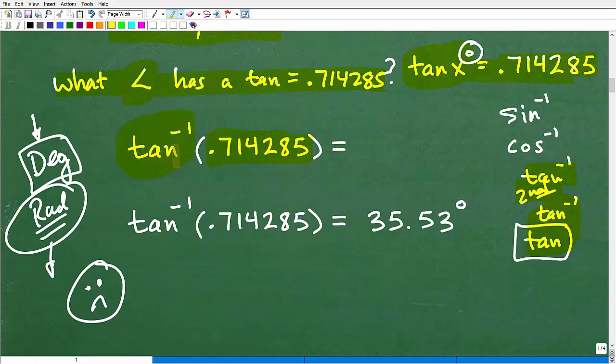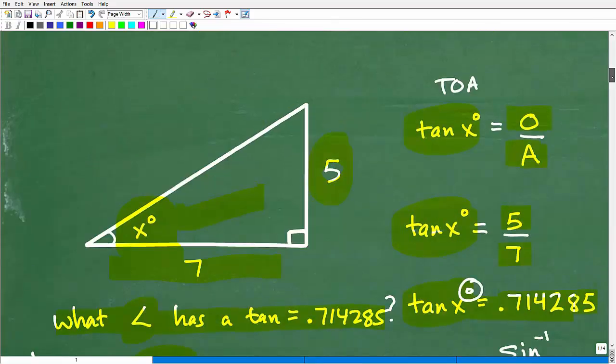So just make sure your calculator is in degree mode because our answer is going to be in degrees. We're going to plug this into our calculator. It's not the tangent, it's going to be the arc tangent, this tan to the negative one. You plug in your decimal just like this and you hit enter, and this pops out. Again, I'm rounding, but you're going to get 35.53 degrees. That's a little degree sign right there, and that is the answer. It's 35.53 degrees.